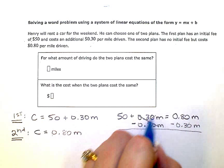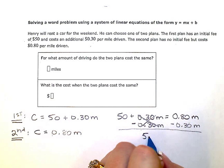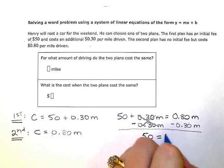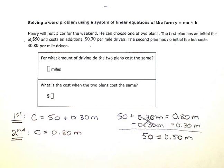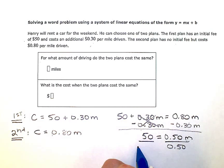And when I simplify, I'll be left with 50 on the left is equal to 0.50 m on the right. Still trying to get the m by itself. So my next step would be to divide both sides by 0.50.